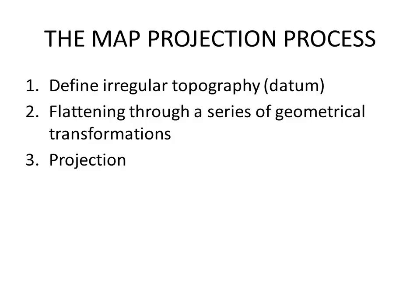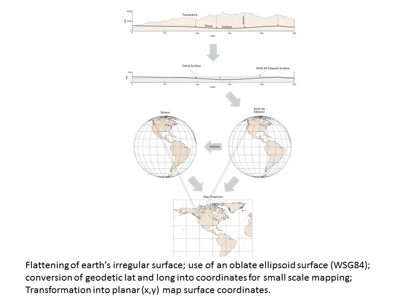The map projection process involves defining irregular topography, that is, the Earth's surface, using a datum, flattening that datum out through a series of geometrical transformations resulting in map projection. Here's a way of representing that idea of taking the oblate ellipsoid surface, which is a way of representing the Earth that is close to being accurate, and converting it into a geodetic latitude and longitude coordinate for small-scale mapping.